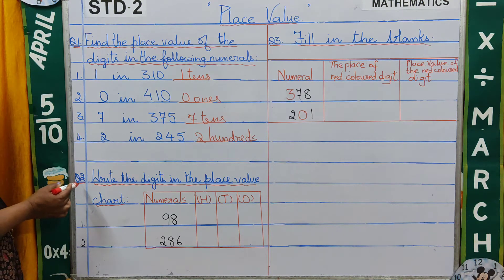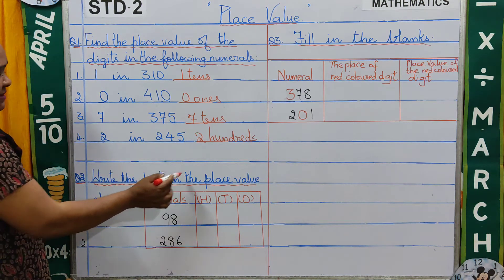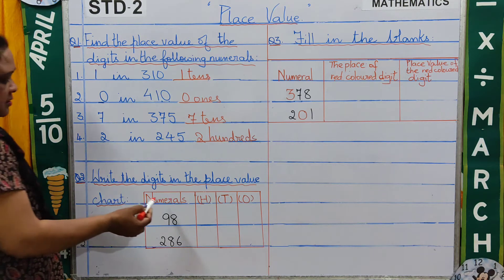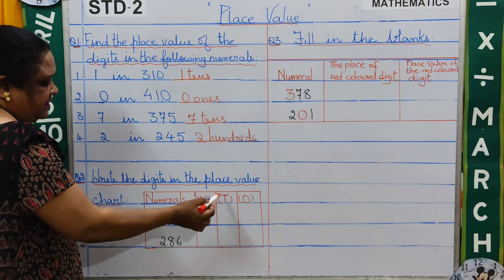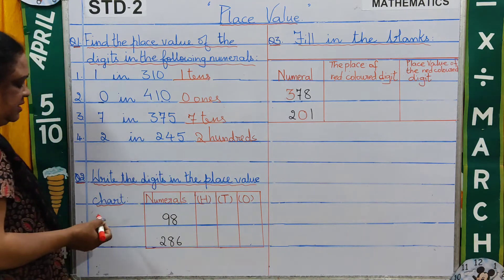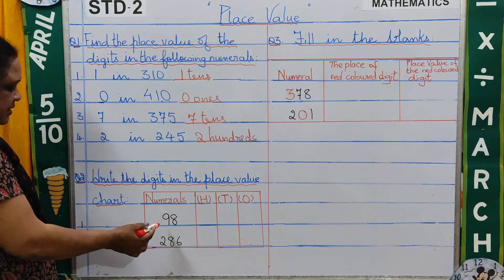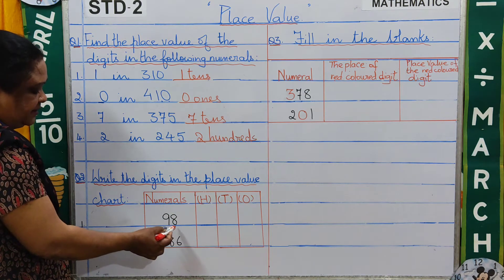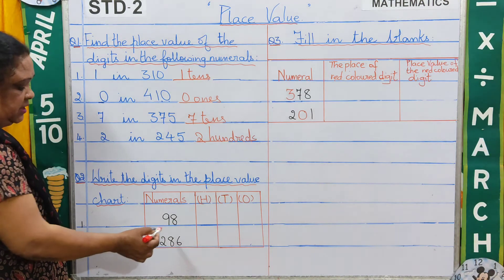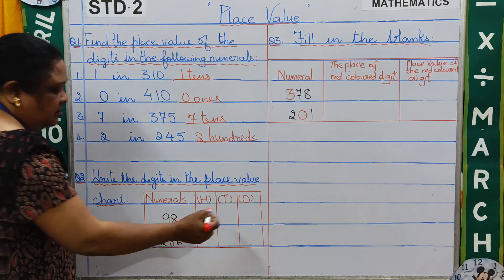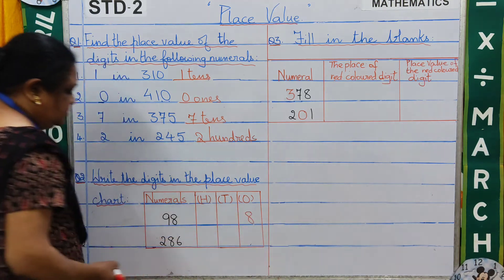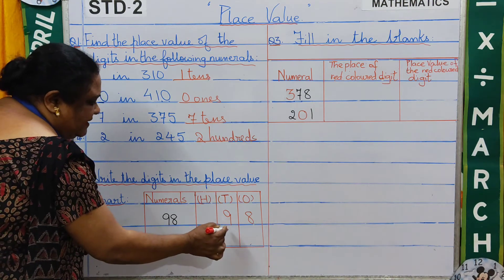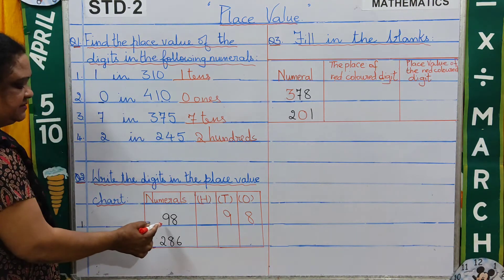Now coming to question number 2: write the digits in the place value chart. The headings are numerals, hundreds, tens, and ones. The first number is 98. It is only a 2-digit number, so 8 is in the ones place and 9 is in the tens place. 9 tens and 8 ones gives us 98.